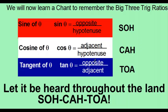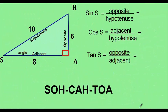The tangent is the opposite over the adjacent. When doing these types of problems, one of the first things you want to do is label your triangle — label the angle, the opposite side, the adjacent, and the hypotenuse. That way, figuring out the ratios becomes a lot easier. If you don't label them, it will be more confusing and you'll be more prone to making mistakes.